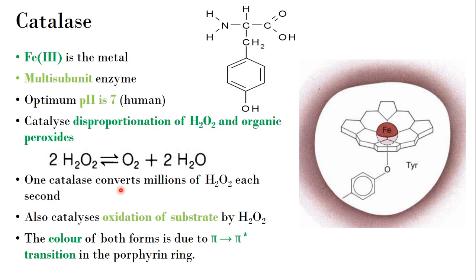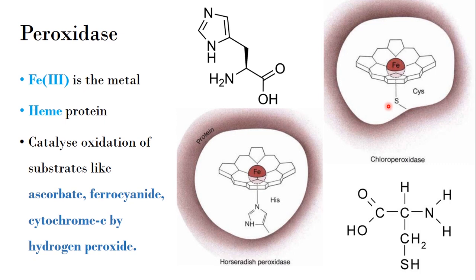Books mention that catalase can convert millions of hydrogen peroxide molecules each second, showing how many processes occur every second in our body. Catalase has two forms: initially Fe³⁺ (reduced form), and upon losing an electron it converts to Fe⁴⁺ (oxidized form). In both forms it is colored due to the π to π* transition involving the porphyrin ring, which is conjugated around the boundary and contains double bonds responsible for this transition.